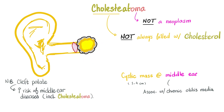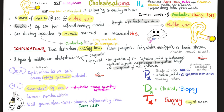If a patient has a cleft palate, they have a higher risk of middle ear diseases including cholesteatoma. Because with cleft palate, there is free communication between the mouth and the nose, meaning material from the mouth can reach the nasopharynx via the Eustachian tube and end up in the middle ear. So a patient with Patau syndrome, which is trisomy 13 — who has cleft lip and palate — can develop cholesteatoma.